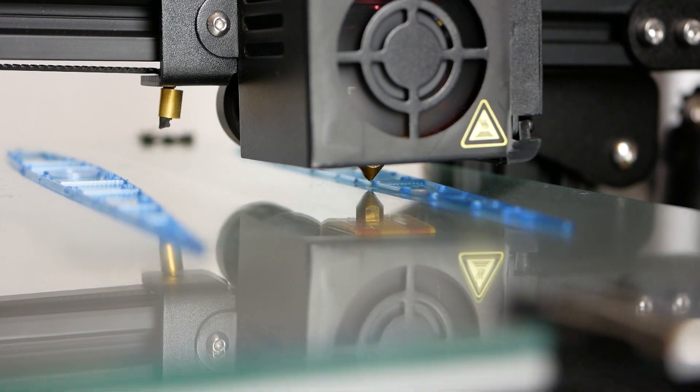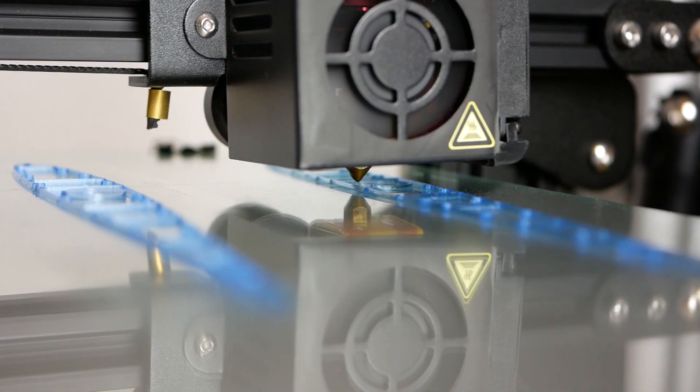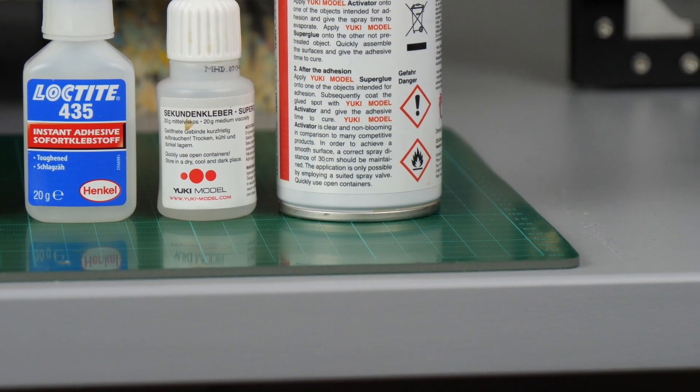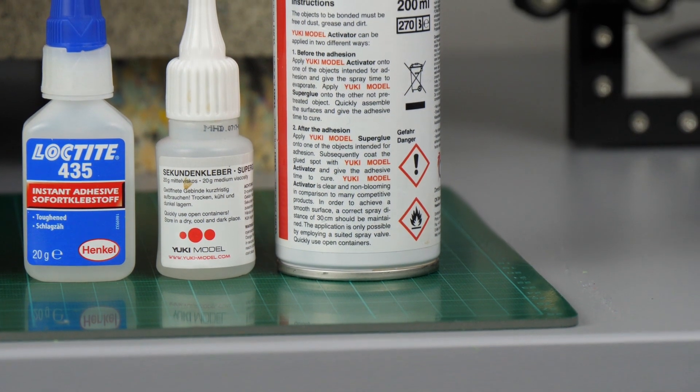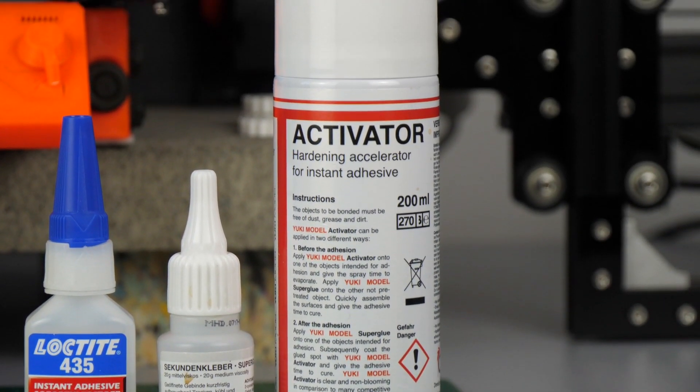Cyanoacrylate is curing in the presence of moisture so you can speed up the process by just breathing on it or use a special accelerator. I wanted to find out what an effect on strength the accelerator has so I tested a second batch of CA samples with the kicker.